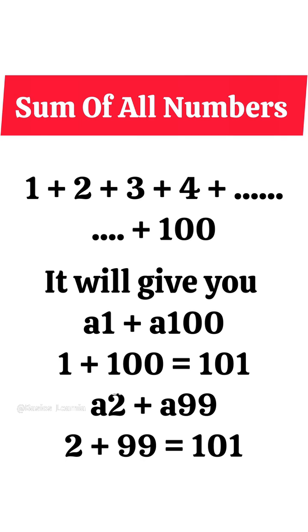It will give you a1 plus a100 mean 1 plus 100 is equal to 101. Then a2 plus a99 mean 2 plus 99 is equal to 101. Similarly, a3 plus a98 mean 3 plus 98 is equal to 101.